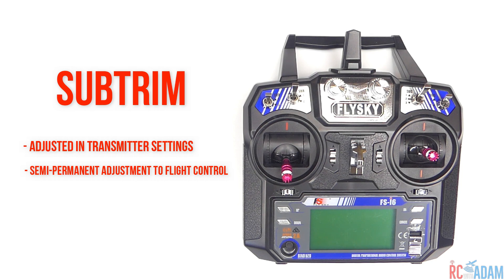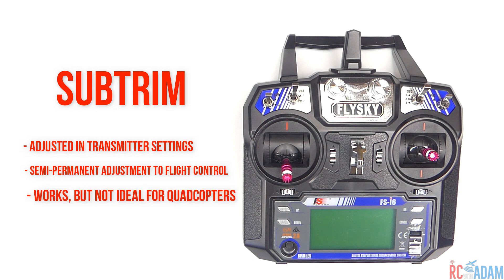For quadcopters, sub trim works just the same way. If your quadcopter is slightly and constantly yawing — which is a pretty common one — you might want to put some sub trim in the opposite direction if you can't fix it in Betaflight or your flight controller configurator. It's definitely not my first choice, but it is an option.